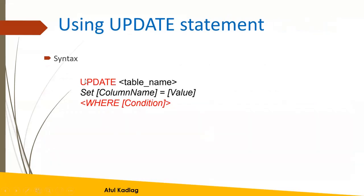The syntax is: UPDATE is the first keyword, then the table name — suppose we have the author table — then SET is again a keyword. A column name will be the column from the table. If you wanted to change the email column of the author table, you mention email equals some new value, and the WHERE condition specifies something like WHERE author_ID equals A2.